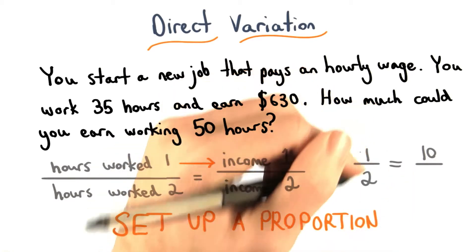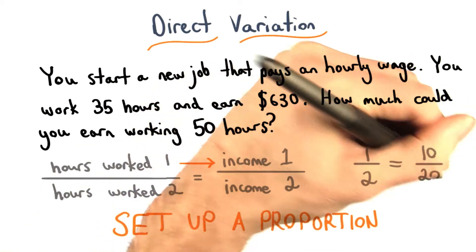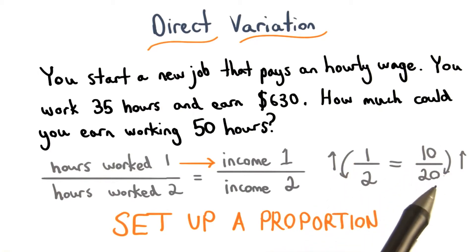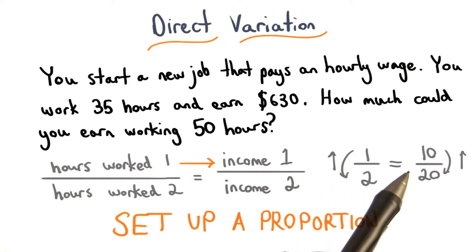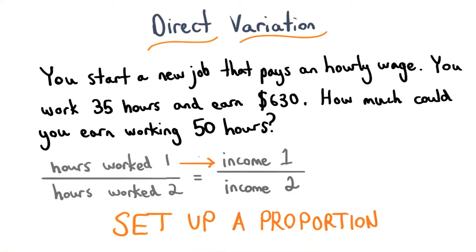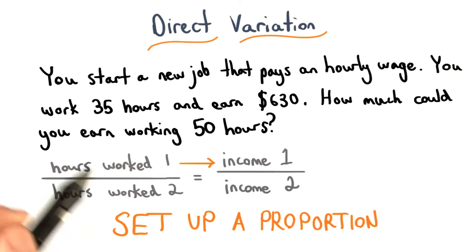So if I work double that amount of time, I would get double the amount of money — I would earn $20. Notice that if my hours worked increased, then my amount of money also increased. This is so that these two fractions will be equal. One of the biggest things we want to make sure of when solving variation problems is that we have one fraction involving hours and another involving income.